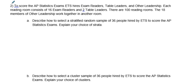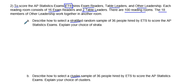We have another example of using strata and cluster samples. To score the AP Statistics exam, ETS — the company that runs the reading of all AP exams — hires exam readers, table leaders, and other leadership. Each reading room consists of 16 exam readers and two table leaders. There are 100 reading rooms, and 18 members of other leadership are in another room. First, let's describe how to select a stratified random sample of 36 people hired by ETS to score the AP exam.